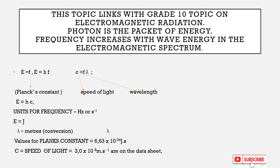Energy is directly proportional to frequency: E equals hf, where h is Planck's constant multiplied by frequency. You were also told that the speed of light equals frequency multiplied by wavelength: c equals f times lambda. Therefore, energy equals Planck's constant h multiplied by speed of light c, divided by wavelength.